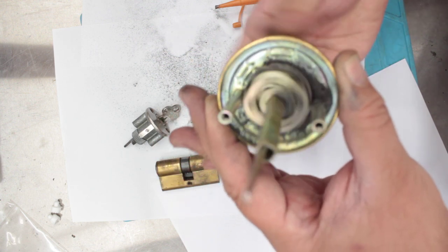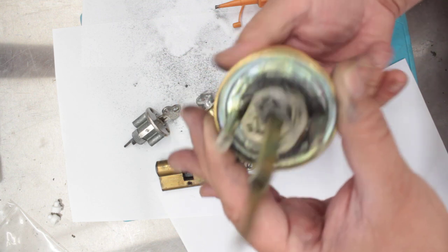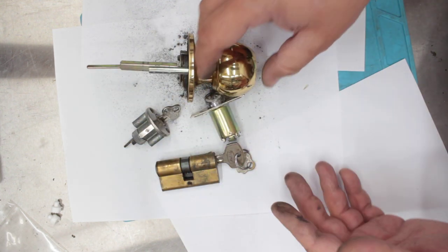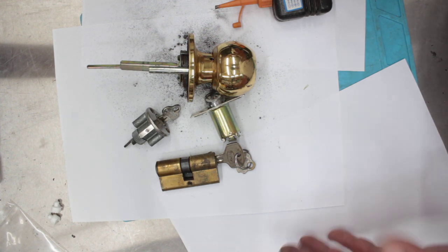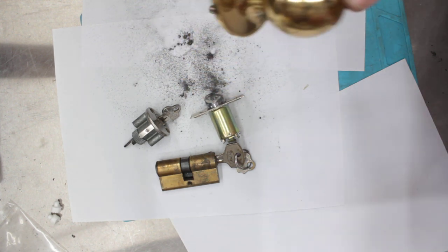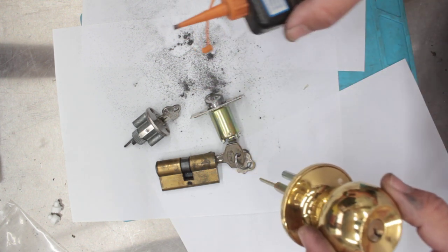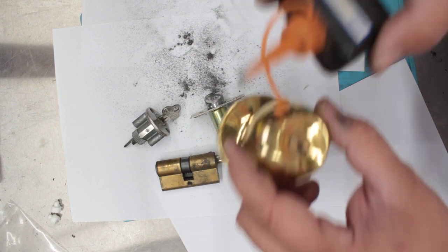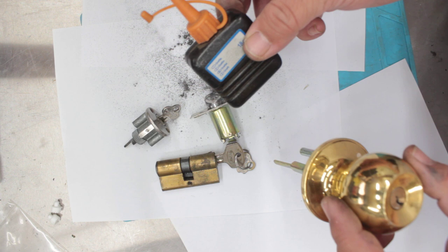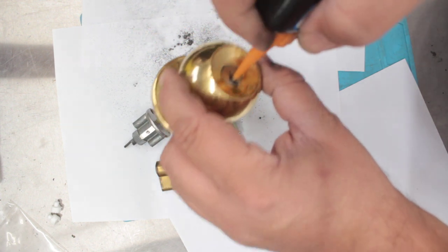Graphite does not fix locks. Locks are mechanical devices and no amount of graphite that you put on that lock is actually going to fix it. The one thing I want you to take away from this is graphite is a lubricant. It's not a magic bullet, it's not a magic locksmith in a can, it's just a lubricant.